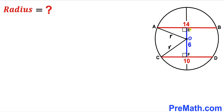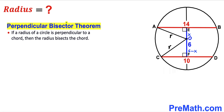Let me label segment OE as x units. We know the whole length EF is 6, so therefore segment OF is going to be 6 minus x. Now let's recall the perpendicular bisector theorem: if the radius of a circle is perpendicular to a chord, then the radius bisects the chord.